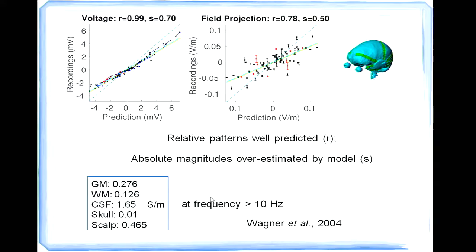So if we plot the model outputs in the X axis and the recording, the Y axis for all the recording electrodes, the first thing we found is there's a very strong correlation between the model and the recording. So that's good news because the model is doing a pretty good job. So you see the correlation is almost one for the voltage and almost 0.8 for the electric field. And this is the field is the electric field projection along the direction of the recording electrical strip. So the model is doing a very good job for predicting the relative distribution patterns for the voltage and the electric field.